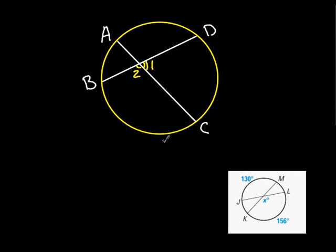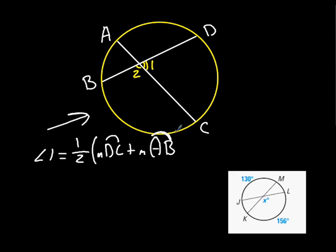Let's take a look at when we have two chords in this situation. Notice how this is not the center. For this situation, angle 1 will end up equaling one-half its angles that it shares. That would be the measure of DC plus the measure of AB. Notice how the measure of this is going to equal this plus this.